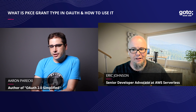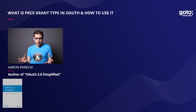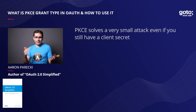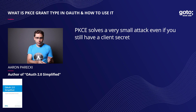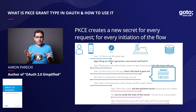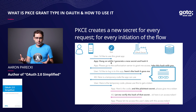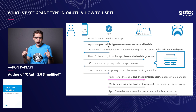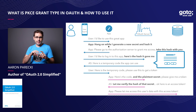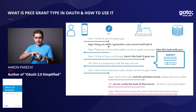So explain PKCE. With the authorization code flow, which I stepped through at a high level, the authorization code flow with a client secret is mostly secure — although it turns out PKCE actually solves a very small attack even if you have a client secret. What PKCE does is create a new secret for every request, for every initiation of the flow. When the app starts the flow, it has to first create a new secret for that particular exchange and it uses that secret to calculate a hash.